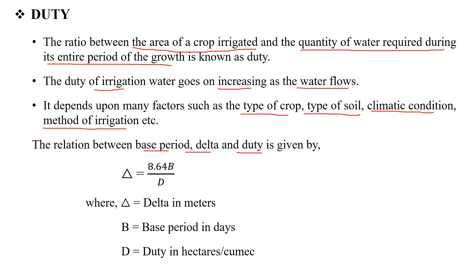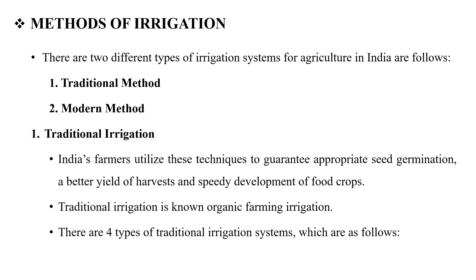Delta is equal to 8.64B divided by D, where B is the base period and D is the duty. These terms — base period, delta, and duty — and their definitions are important. Next, we will study the methods of irrigation. We have two types: the first method is the traditional method and the second method is the modern method.